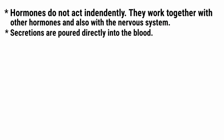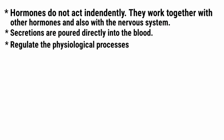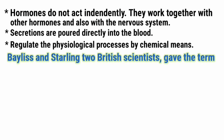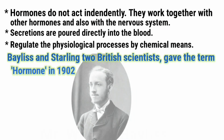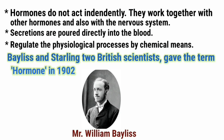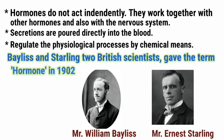Secretions are poured directly into the blood and regulate physiological processes by chemical means. Baylis and Starling, two British scientists, gave the term 'hormone' in 1902. Hormones are basically chemical substances which are secreted by our glands, and together with the nervous system they coordinate and control our body functions.